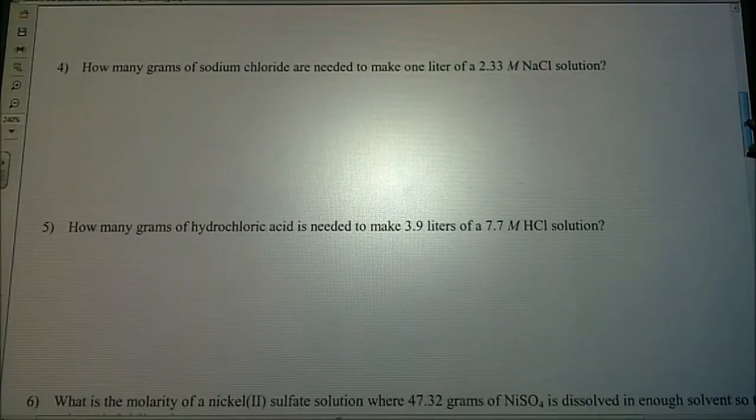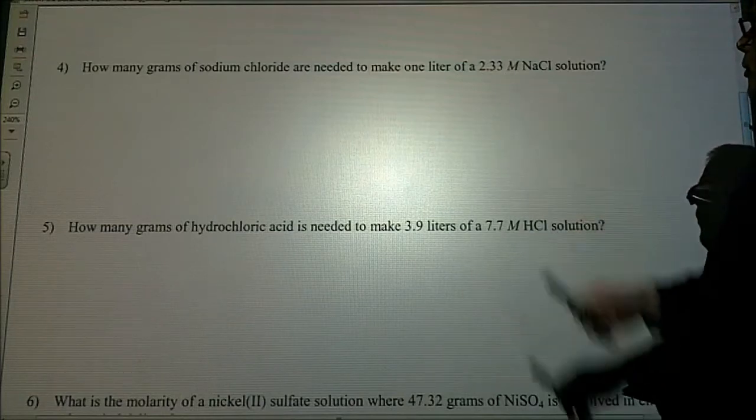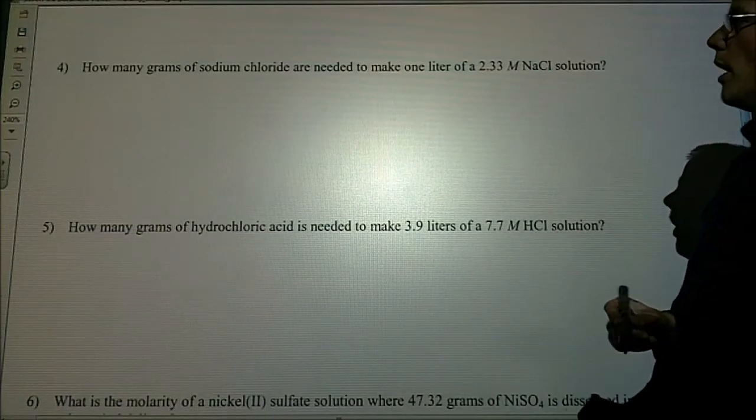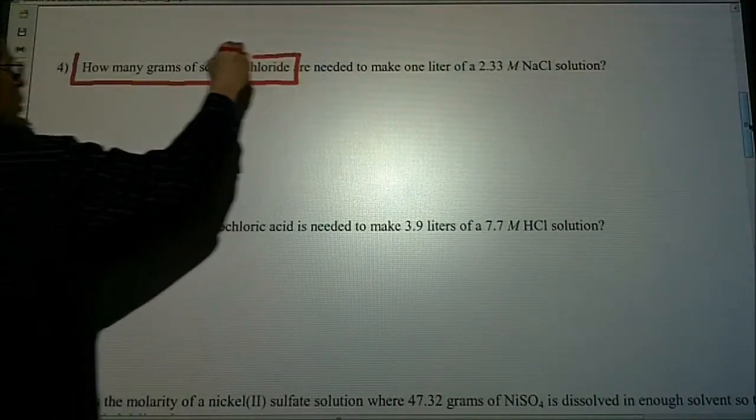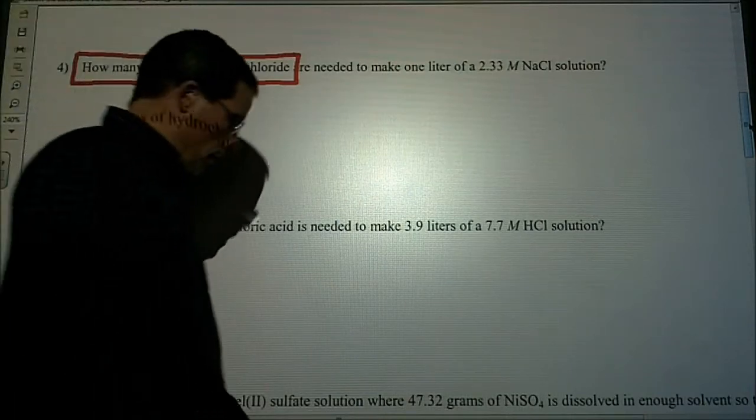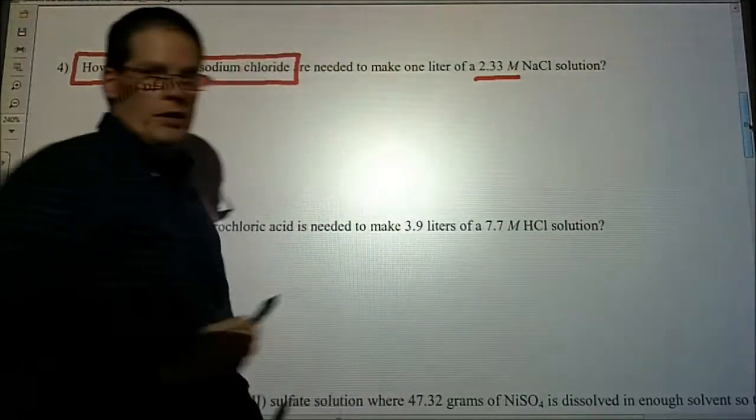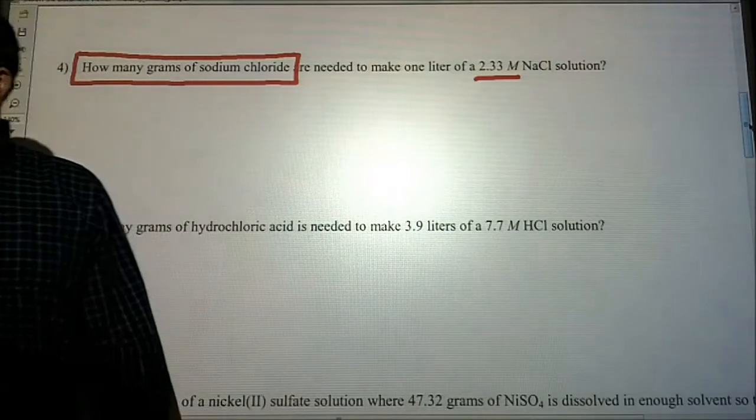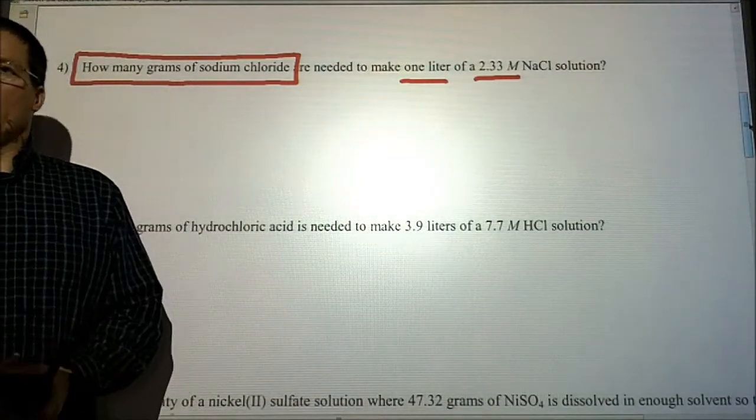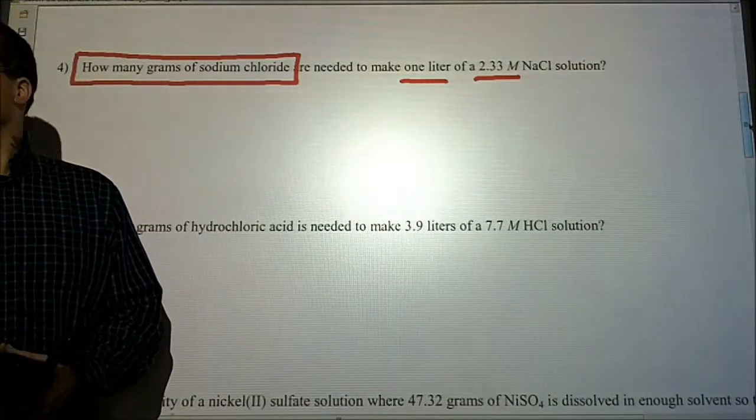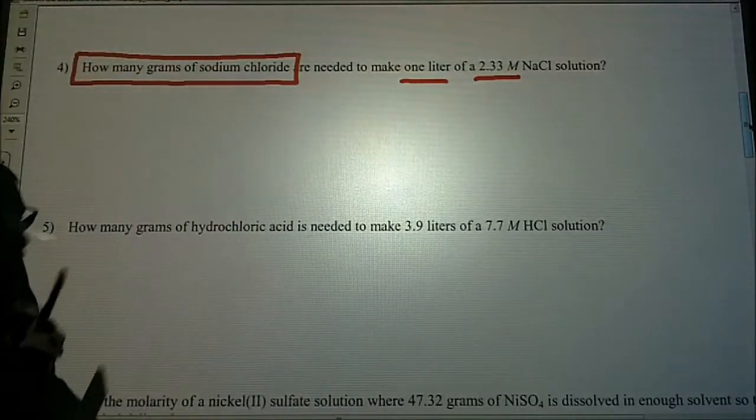Let's take a look at number four. Number four asks, how many grams of sodium chloride are needed to make one liter of a 2.33 molar solution? The question is asking how many grams of sodium chloride are in this solution, and we're given a 2.33 molar solution. What's interesting about this question is the volume is also given, but it's kind of hidden. It's in word form, so make sure you're identifying things before you even begin.